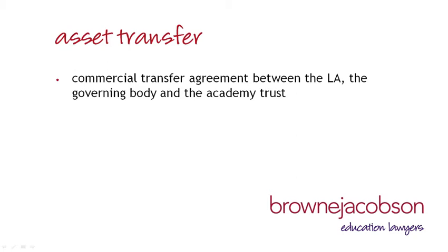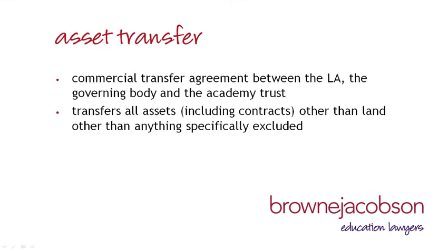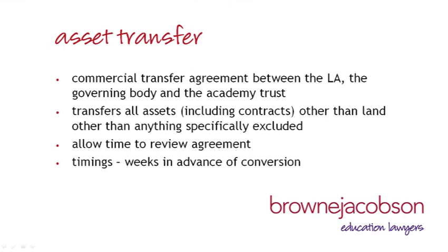It is not just staff that will need to transfer. The Academy Trust will also need assets and contracts to run the Academy. The transfer of assets and contracts is dealt with in an agreement known as the Commercial Transfer Agreement. The local authority, the governing body of the maintained school and the Academy Trust will all need to be party to this agreement. You will need to compile a list of those contracts which need to be transferred to the Academy Trust, and also consider whether there are any contracts or assets which should not be transferred, as these will also need to be explicitly excluded. Sufficient time needs to be given to enable the local authority to review this document and for any negotiations to take place. The DfE are increasingly requesting that the Commercial Transfer Agreement is in an agreed form some weeks in advance of the conversion date.